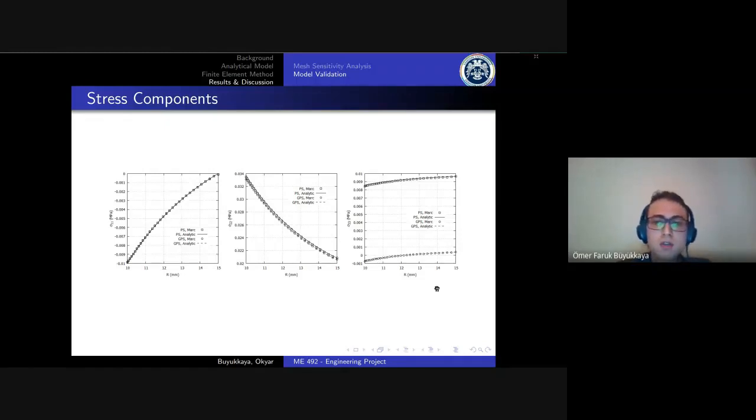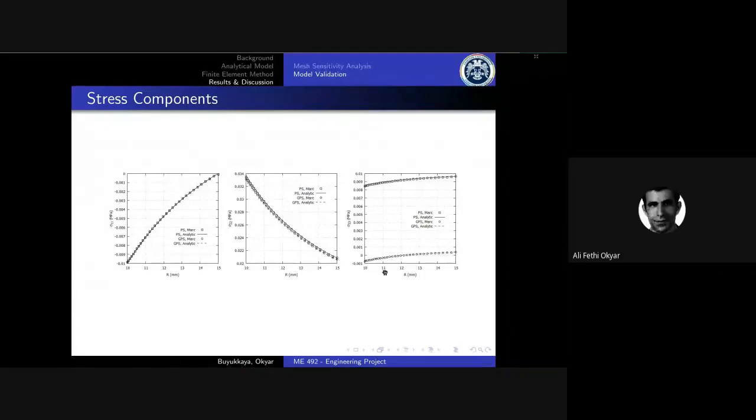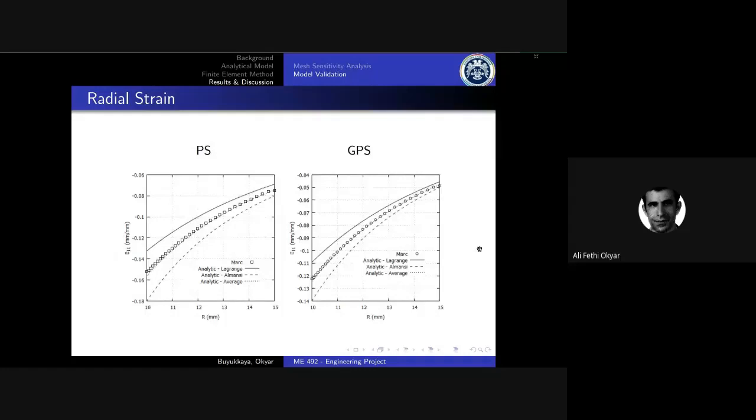The Cauchy stress in the axial direction for plane strain case is much higher because the top surface of the cylinder is constrained for plane strain case. However, in the GPS case the top surface is set free.